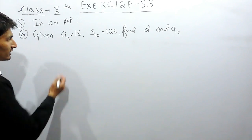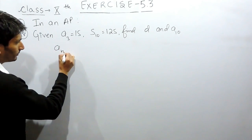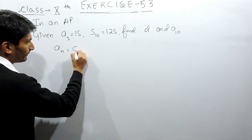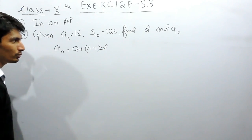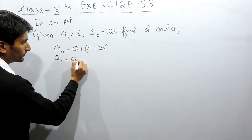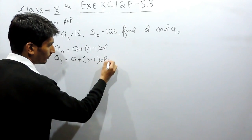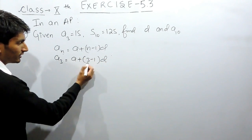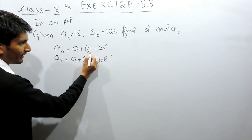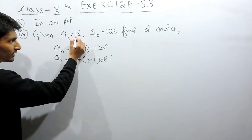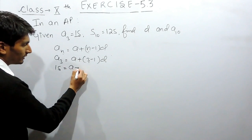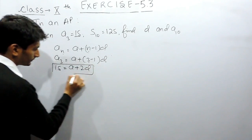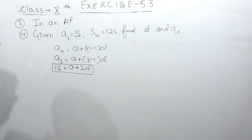The 3rd term is given to us. To find the nth term of an AP, we have the formula: nth term = a + (n-1)d. Since the 3rd term is given as 15, we substitute n=3, giving us a + 2d = 15. This is our first equation.